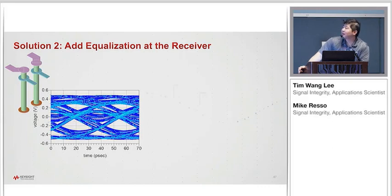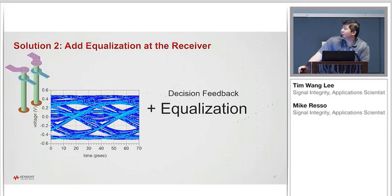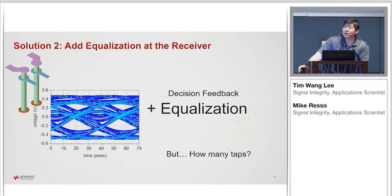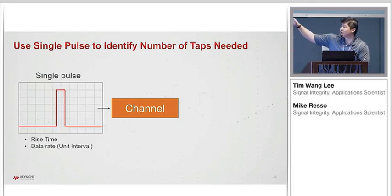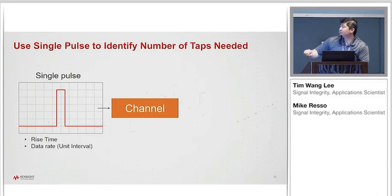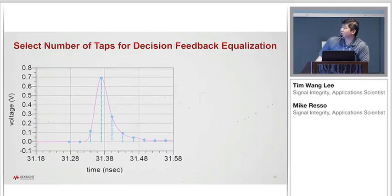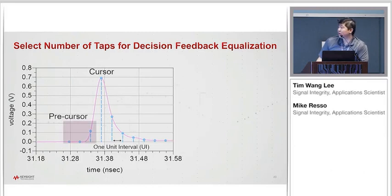Solution two: we can add equalization. But if I'm doing decision feedback equalization, how many taps do I need? That's a frequent question. The single pulse response will help us identify the number of tabs needed. We send a single pulse on the input at a specific rise time and data rate, and on the output comes the single pulse response. I mark the maximum as the cursor, separate by one unit interval, and whatever happens before the cursor is the precursor, whatever happens after is the post cursor. This lets me identify the number of precursors and post cursors needed for equalization.